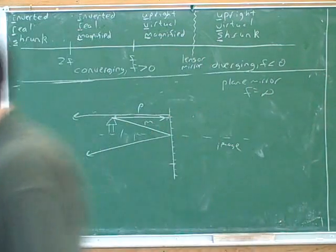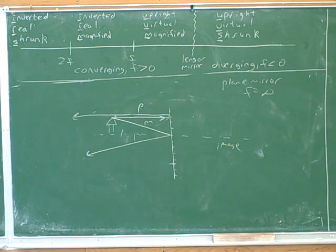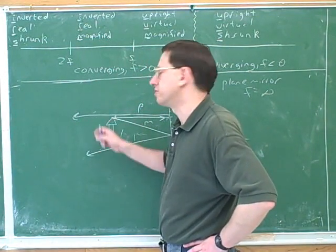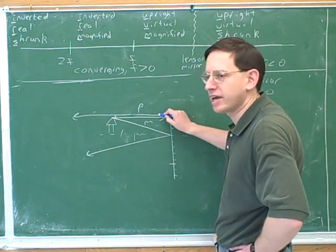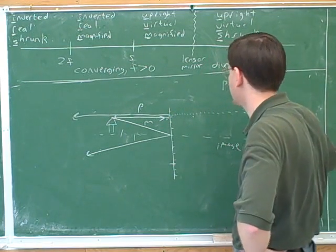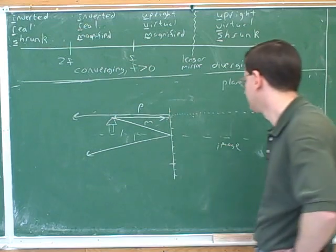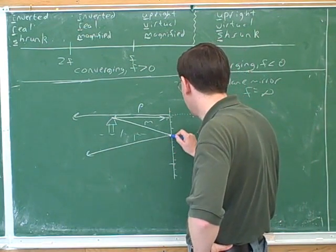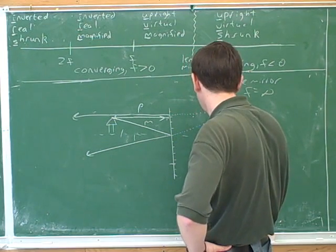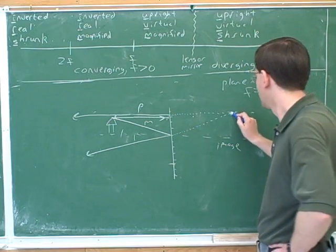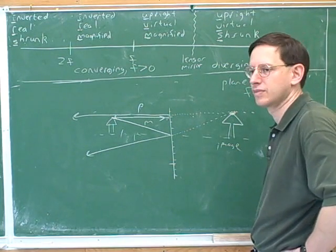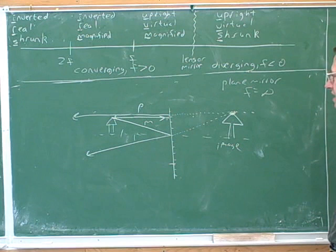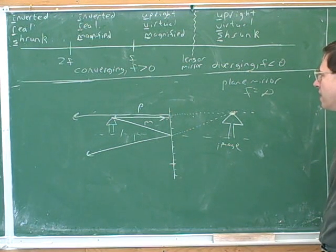All right, now we have to figure out where the image is. Well, remember at the bottom of that table in the handout, the image is either where the outgoing light rays or their tracebacks converge. Well, are these outgoing light rays going to converge, or do we have to trace them back? We're going to have to trace them back. These are never going to converge, so we have to trace them back. And here's what I mean by a traceback. I'll take this outgoing p ray, and I'll trace it back behind the mirror with a dashed line. And then I'm going to take the outgoing m ray and trace it back behind the mirror. And wherever they intersect, I'm going to draw an arrow for the new image. All right, that is how you do the ray tracing for a plane mirror.